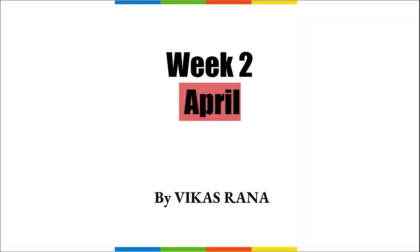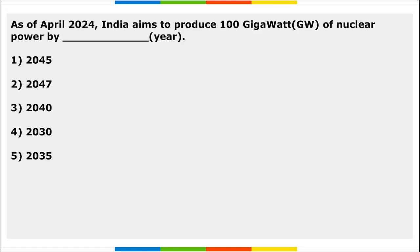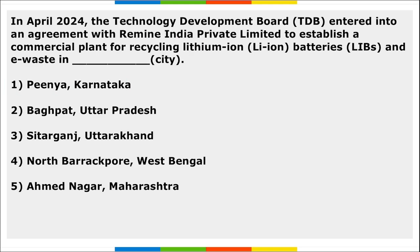Hello everyone. In this video, we will be discussing important current affairs for the second week of April. First question: as of April 2024, India aims to produce 100 gigawatt of nuclear power by which year? The answer is by 2047 — India aims to produce 100 gigawatt of nuclear power. Take a note of this.